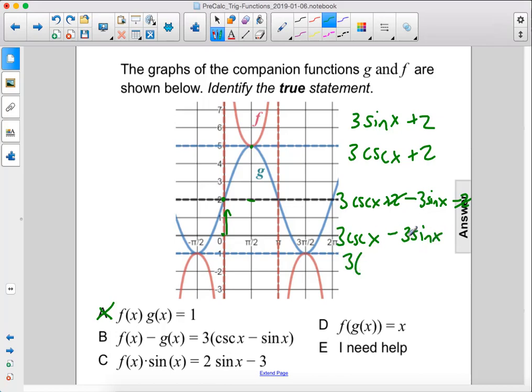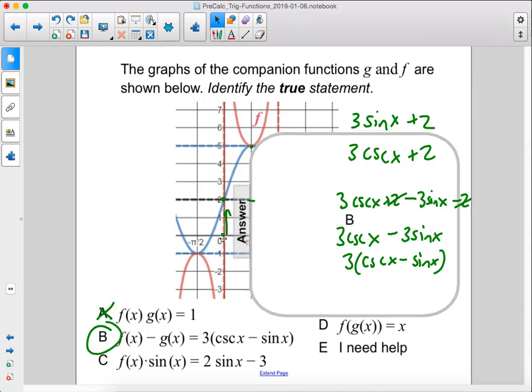So if you factor out the 3, cosecant x minus sine x. And that is true. The answer to this problem is B.